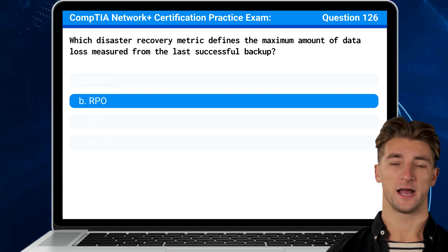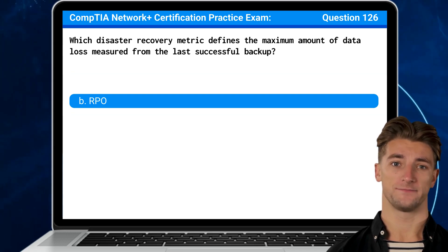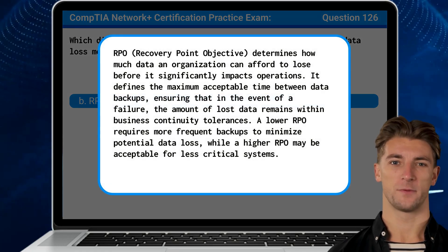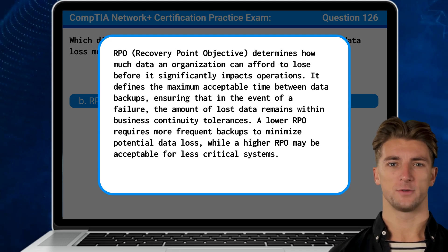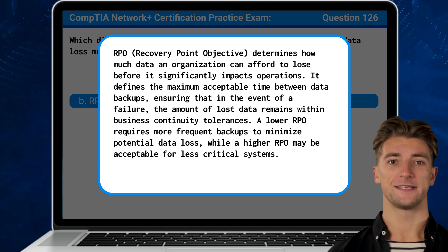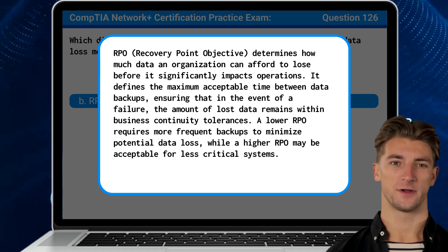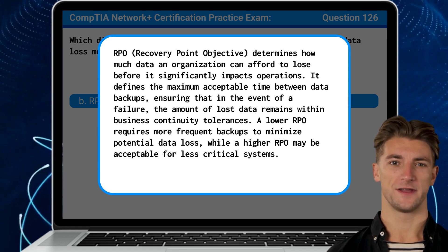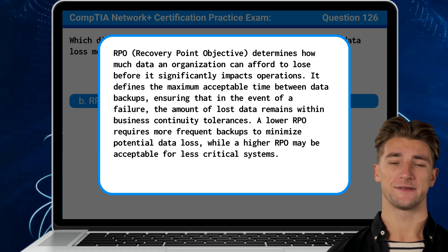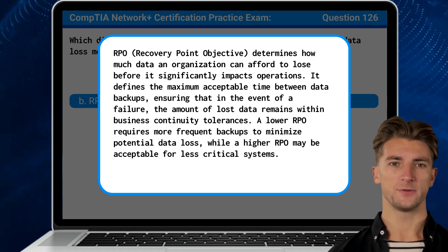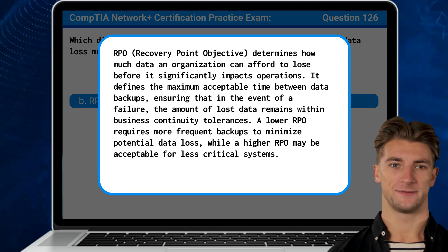The answer is B — RPO, or Recovery Point Objective. RPO determines how much data an organization can afford to lose before it significantly impacts operations. It defines the maximum acceptable time between data backups, ensuring that in the event of a failure, the amount of lost data remains within business continuity tolerances. A lower RPO requires more frequent backups to minimize potential data loss, while a higher RPO may be acceptable for less critical systems.